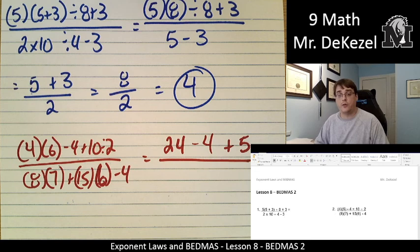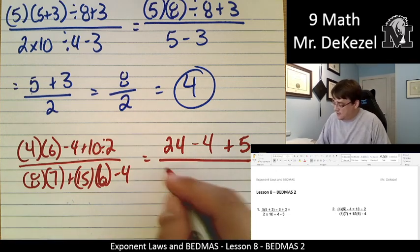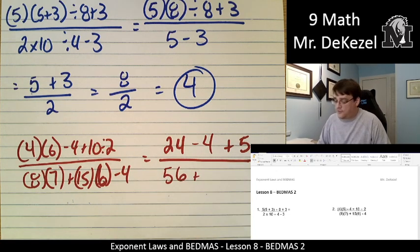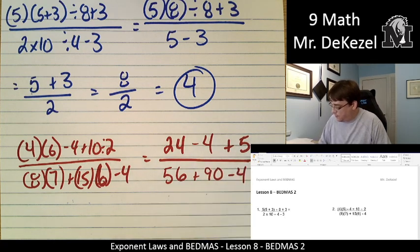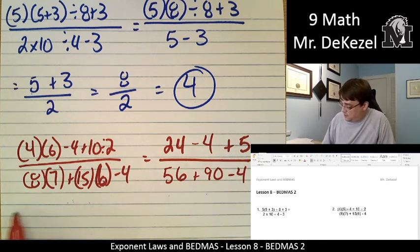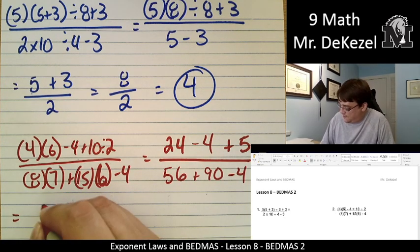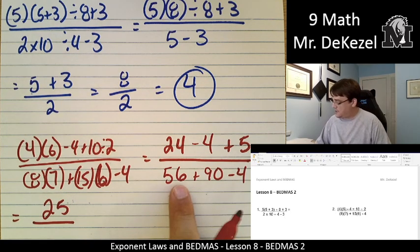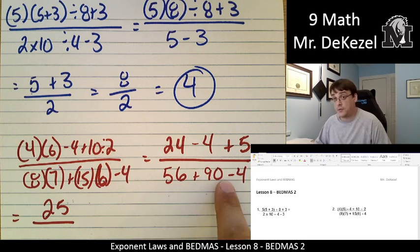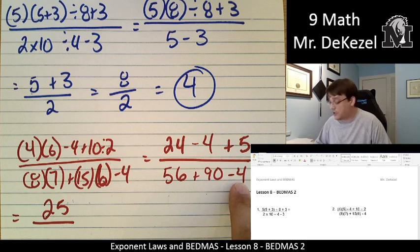On the bottom, again, we have no brackets with things inside the brackets to do. We just have brackets that represent multiplying. So 8 times 7 is 56, and 15 times 6 is 90. We're going to subtract 4 from that at the end. Let's go here. 24 minus 4 is 20 plus 5 is 25. And let's see here. 56 plus 90, that would be 146 minus 4 is 142.